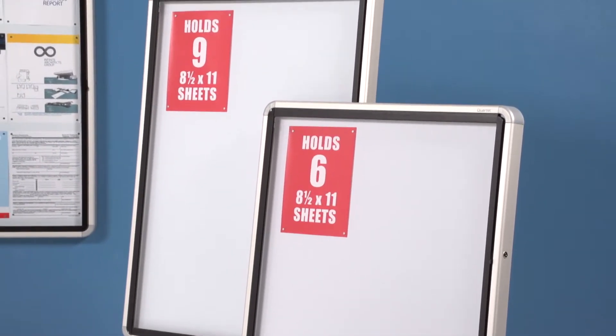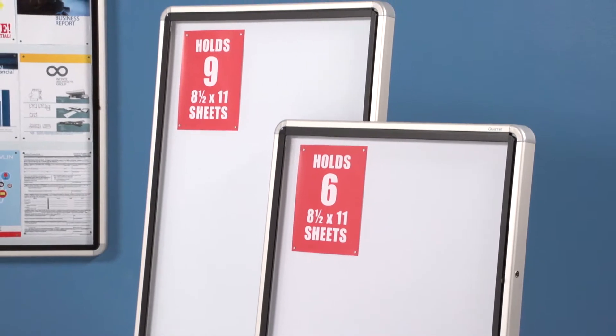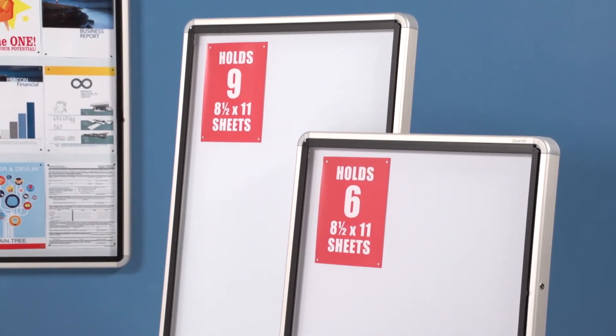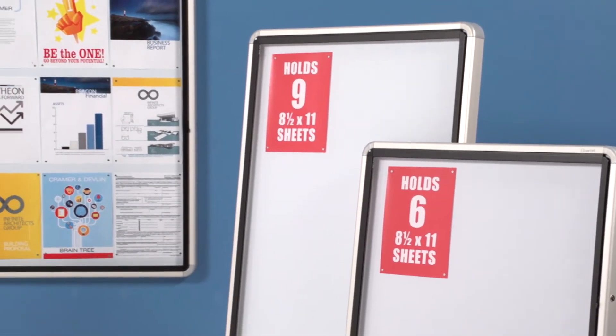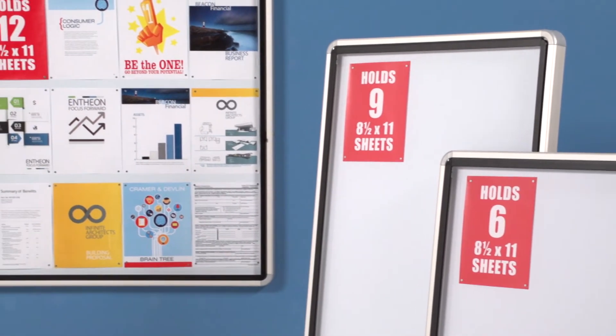The 30 by 39 inch enclosed board will hold a 27 by 37 inch sign, or nine letter size documents.